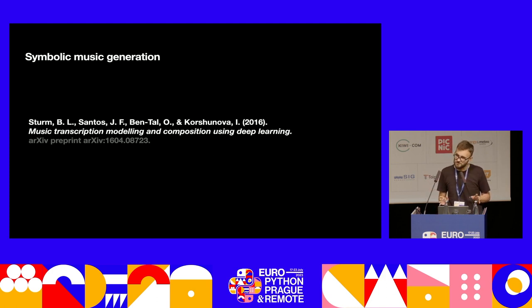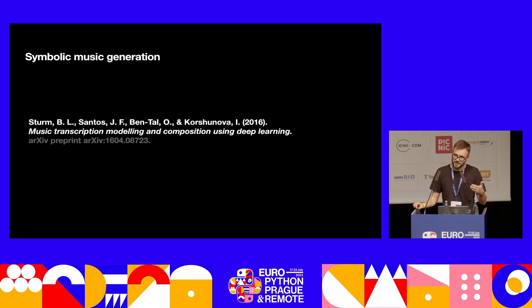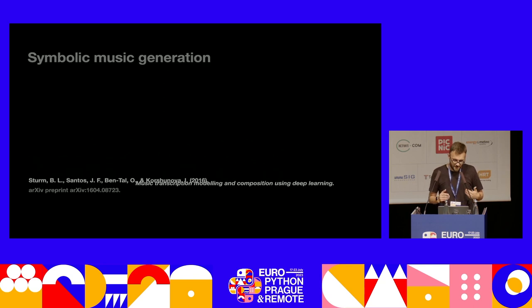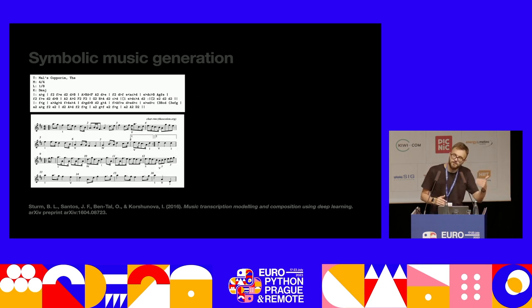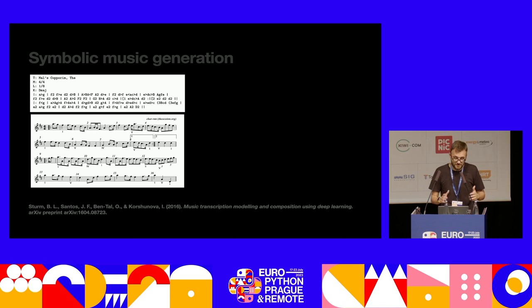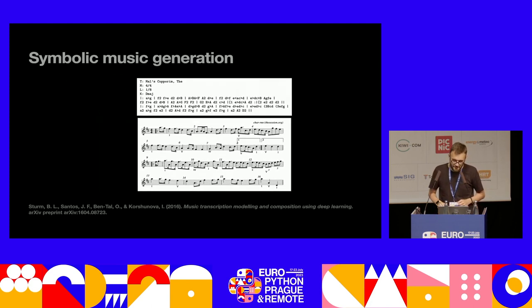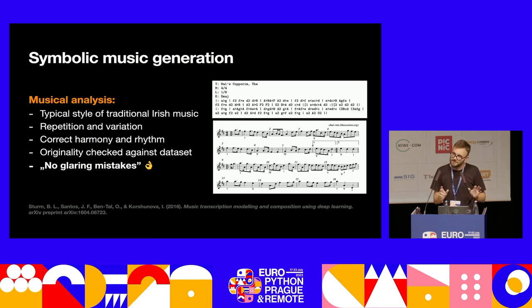There's this paper from 2016 that I really like. It's called 'Music Transcription, Modeling and Composition Using Deep Learning.' The authors use a recurrent neural network, which by today's standard is a pretty simple model. They use music in what's known as the ABC format, which is basically text with some additional metadata. It can be further rendered down into MIDI and then into audio, so you can listen back to it. This is basically the task of predicting the next character in a sequence of text. I really like this paper also because the authors provide a very nice musical analysis of the results.